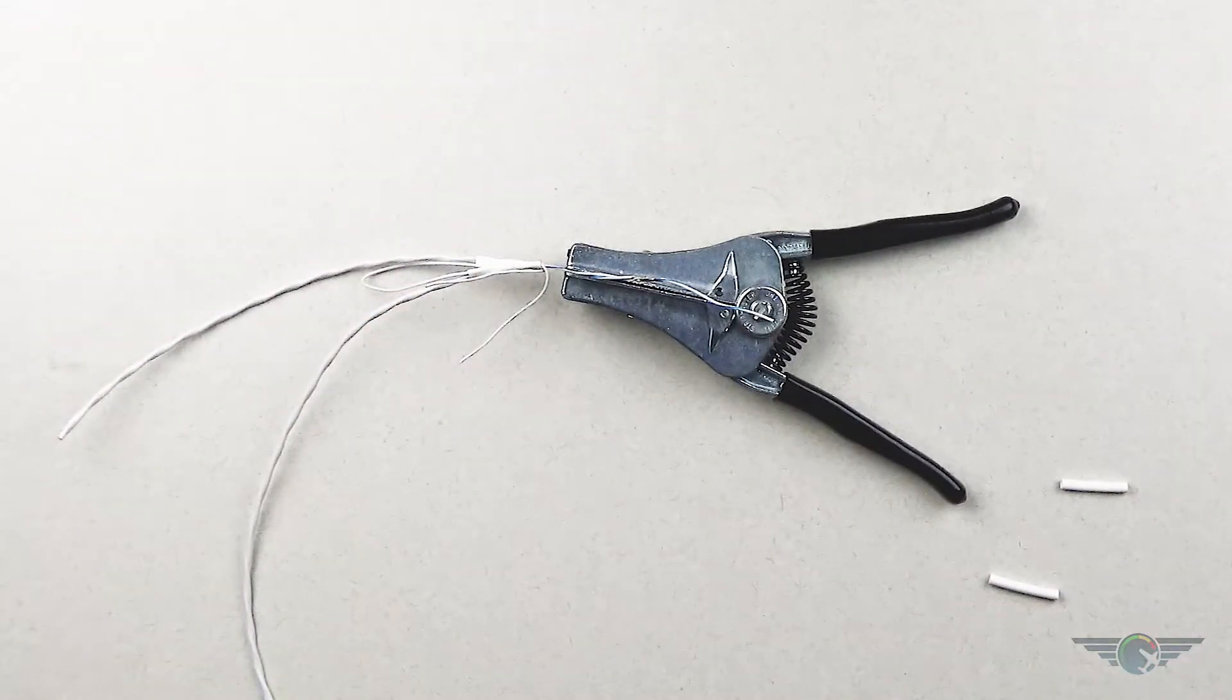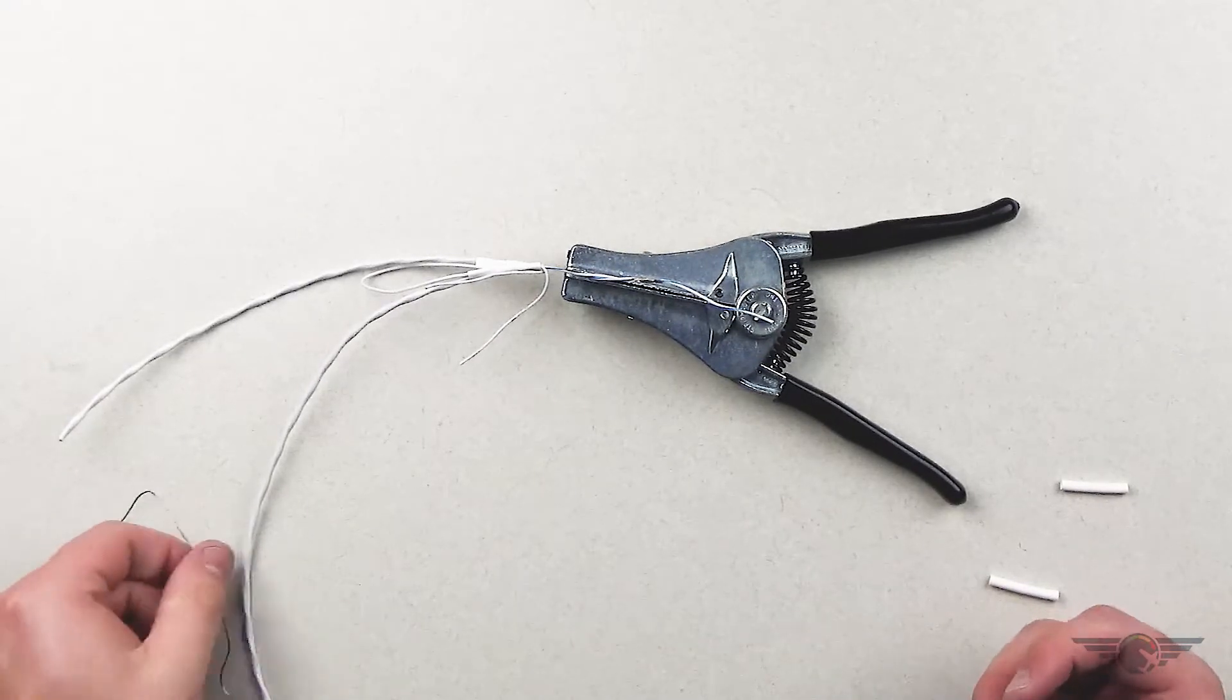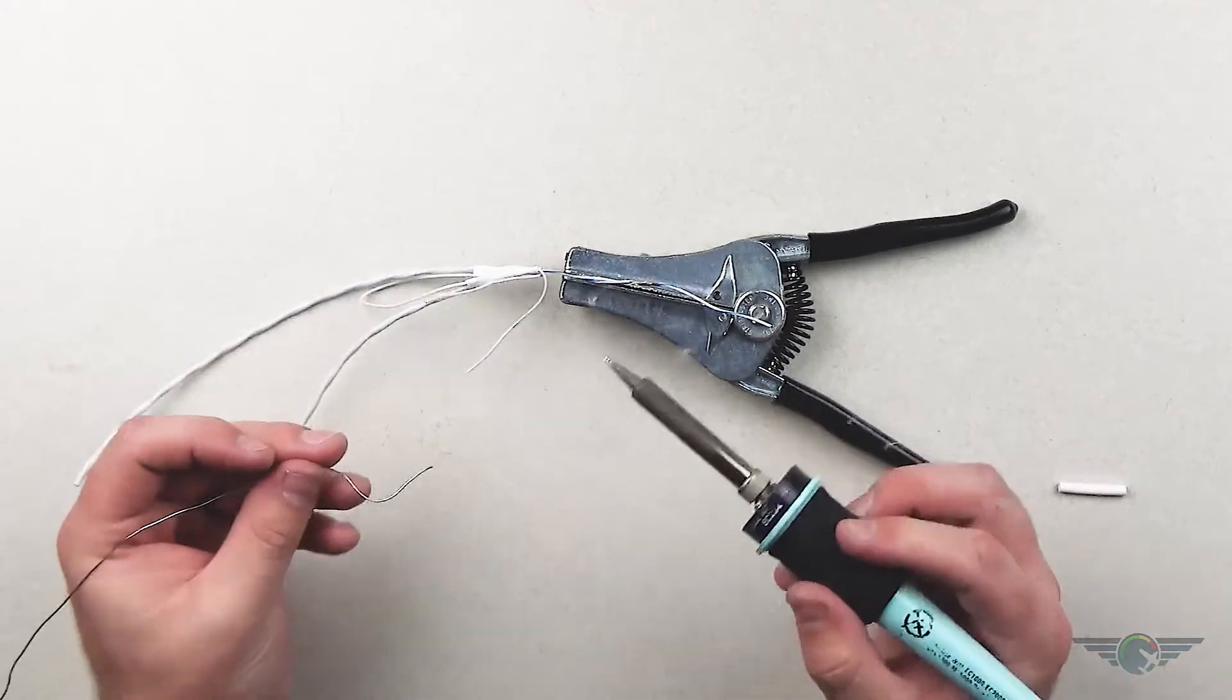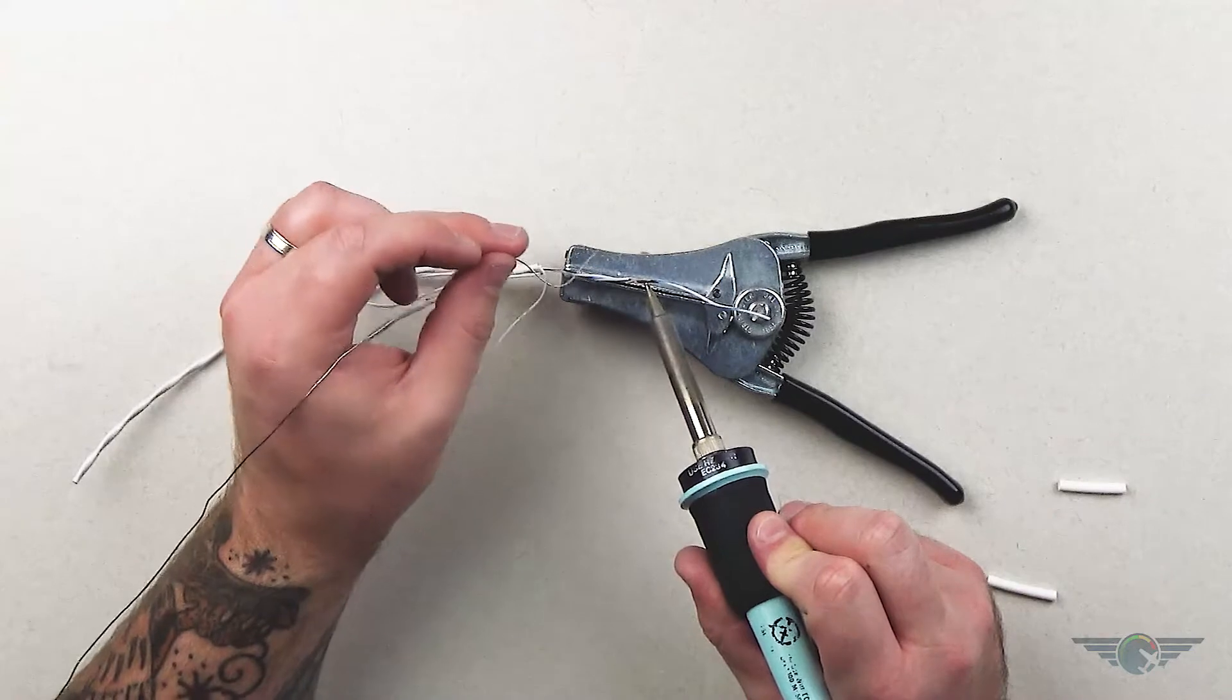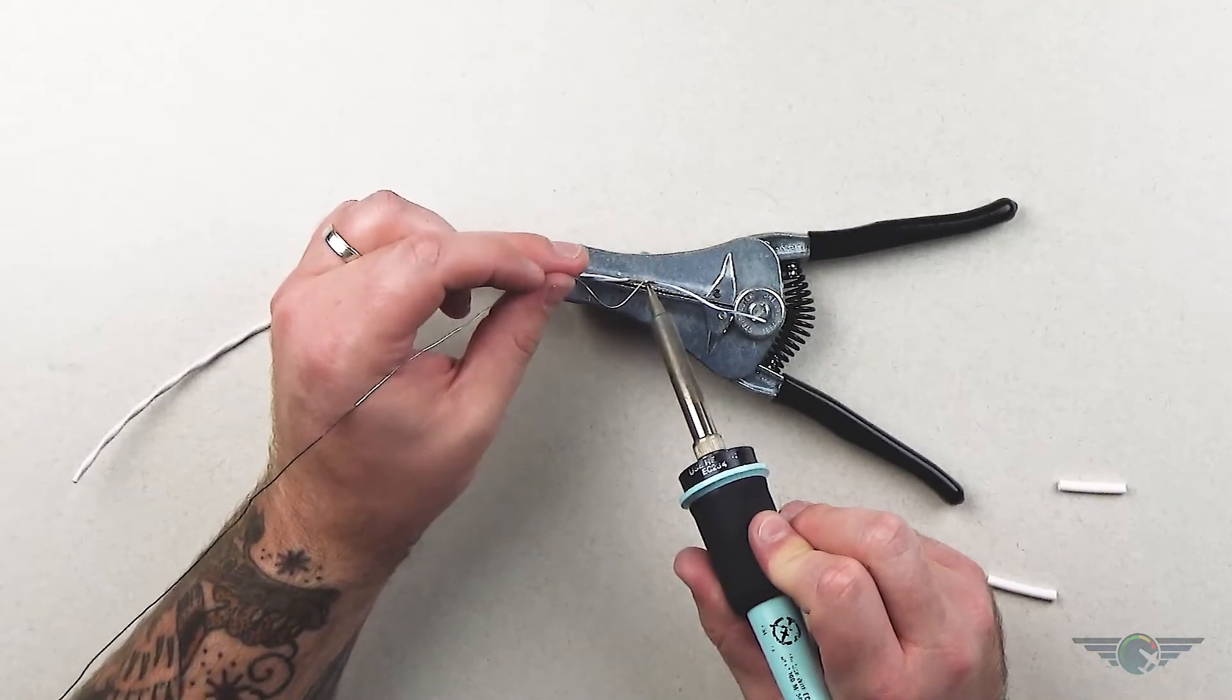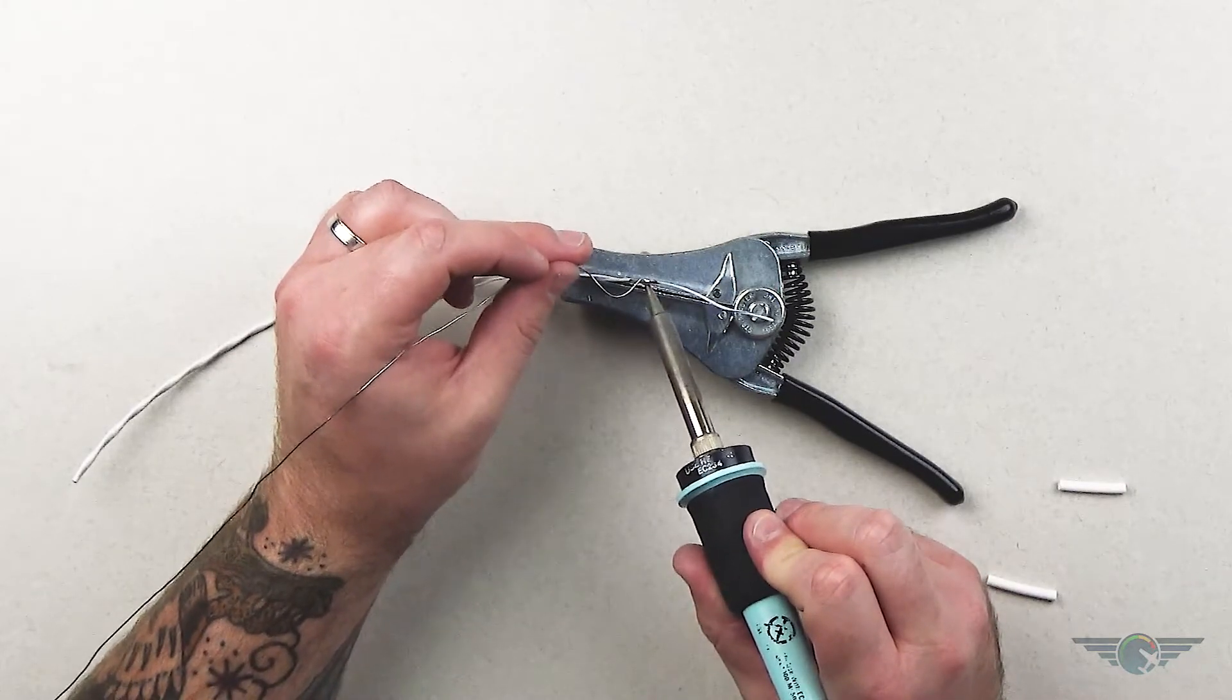And now take my soldering iron. And again, same thing we've been doing when we solder. So we add a solder ball. Put it on the bottom of the wire. Let it get hot. There we go. The wire's nice and hot. We can draw that solder all the way through.